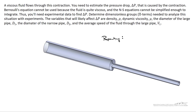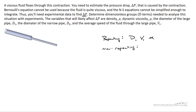Now we need to select repeating variables — three of them, because we've got three dimensions: mass, length, and time. We're not going to include the dependent variable delta P. With that in mind, I'm going to choose D1, V1, and mu. You can choose whatever you want and you'll come up with different pi terms, but they'll be just as appropriate and can be manipulated to form equivalent results. This leaves the non-repeating variables as delta P, density, and the diameter of the narrow pipe D2.